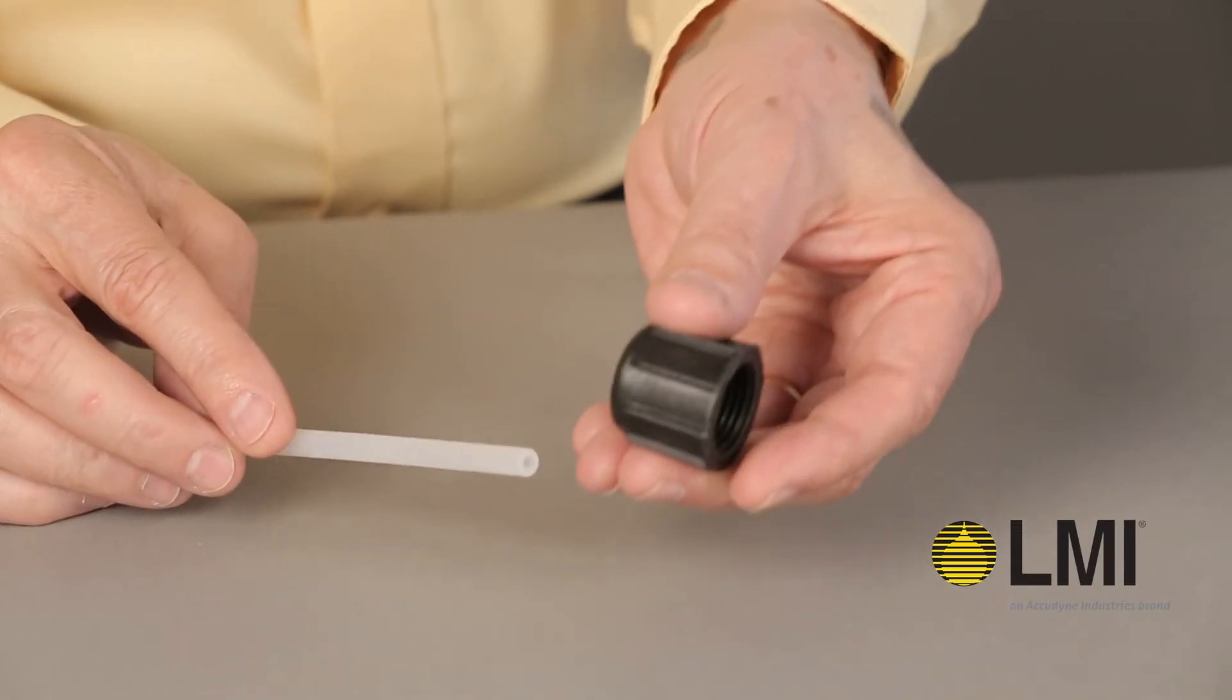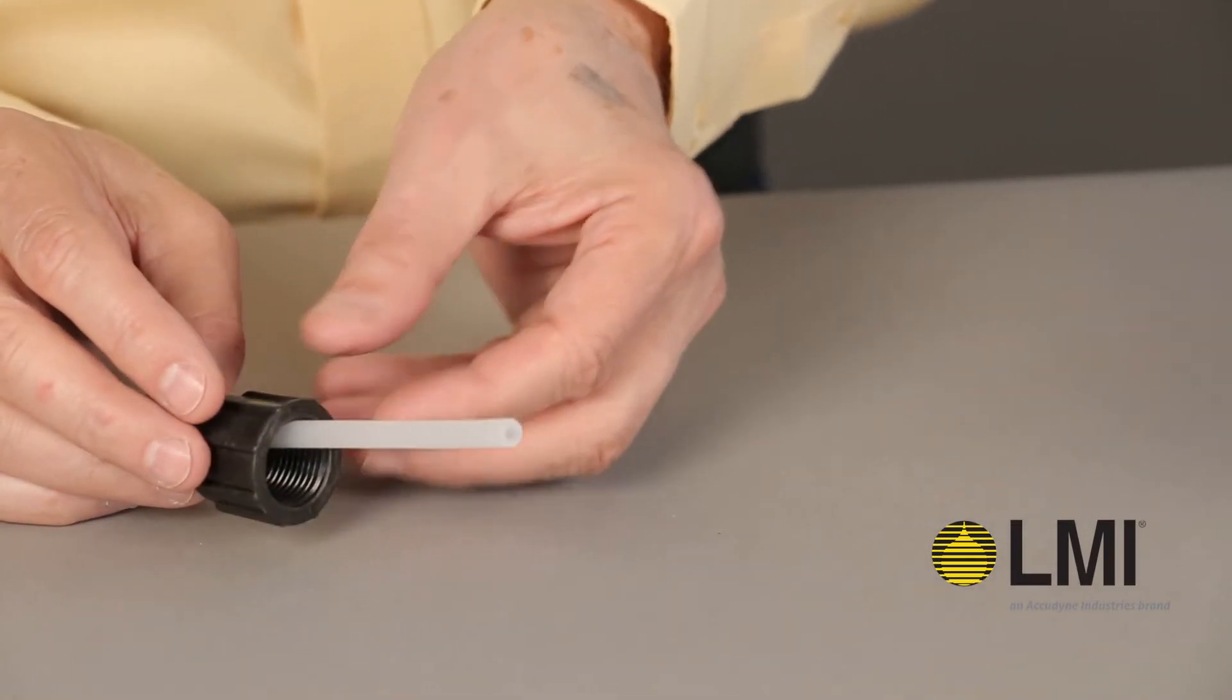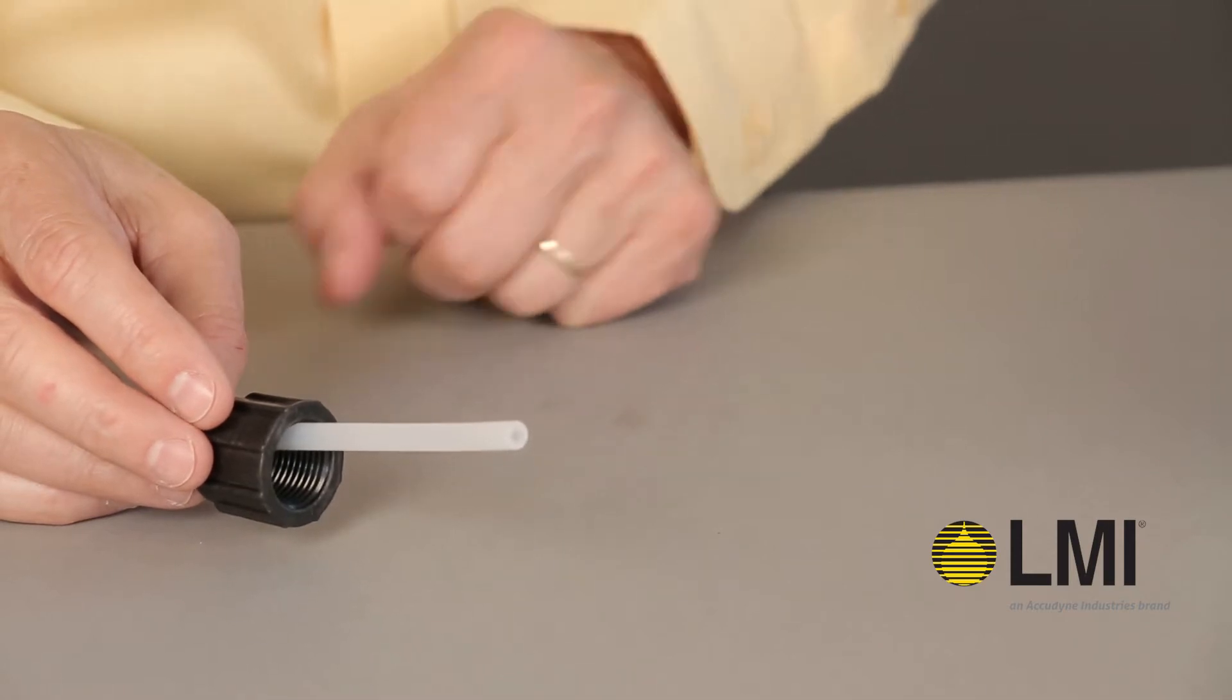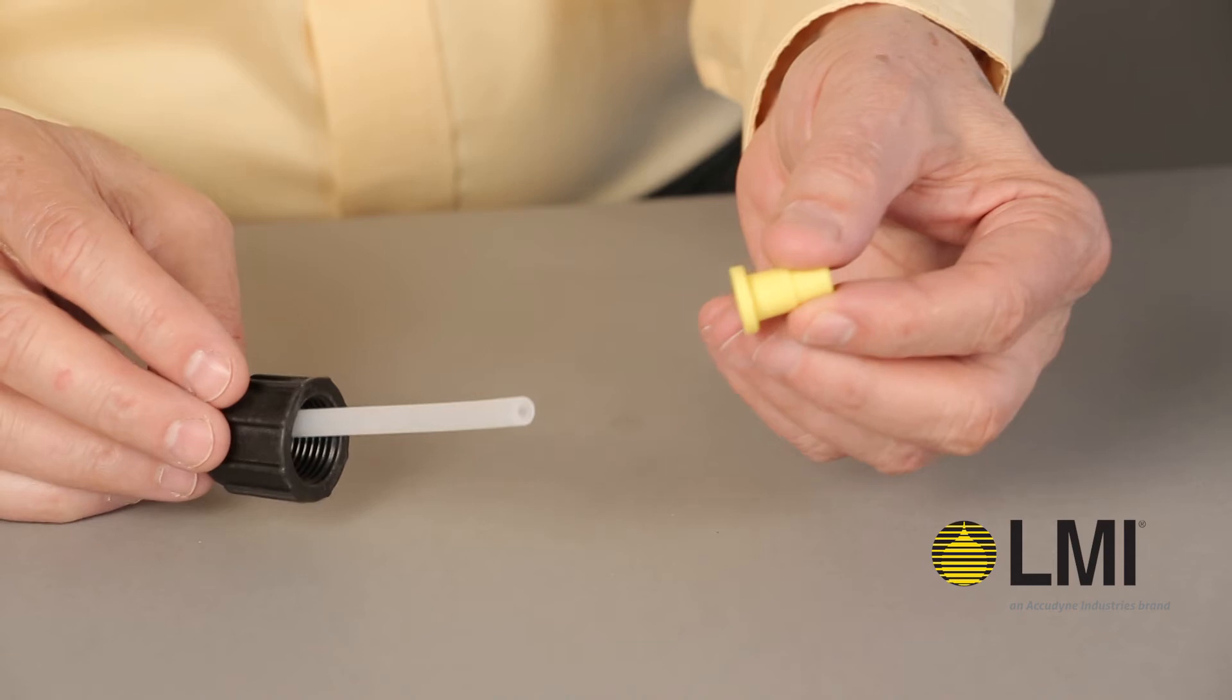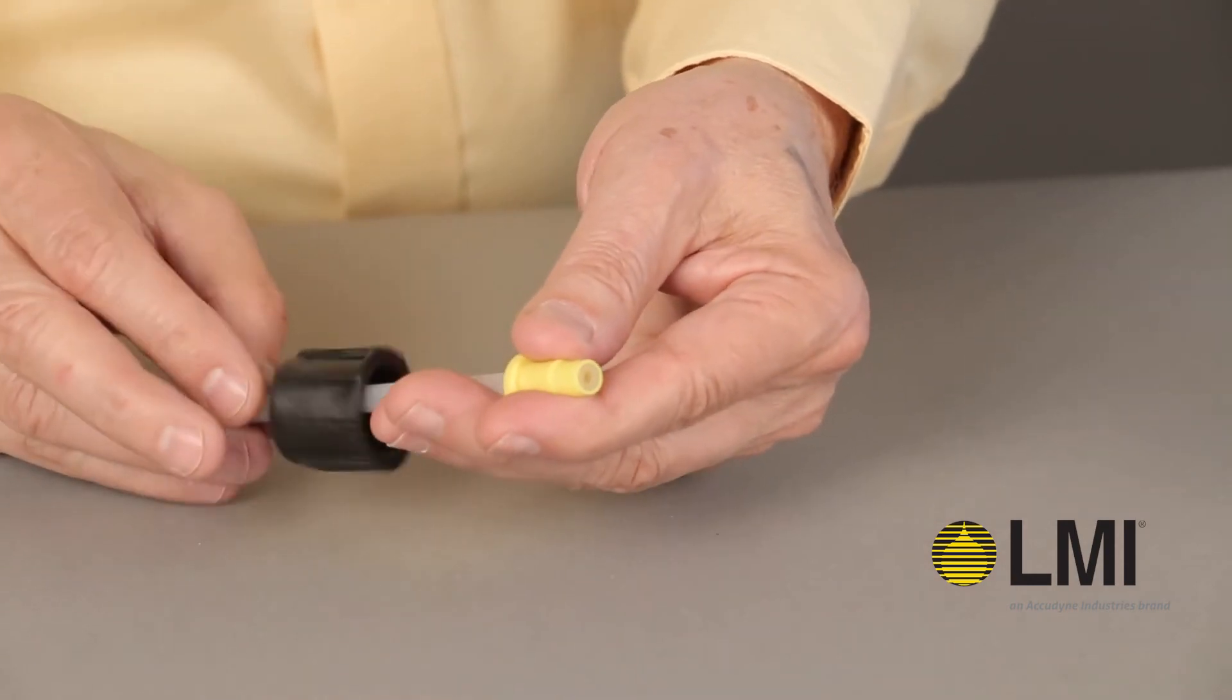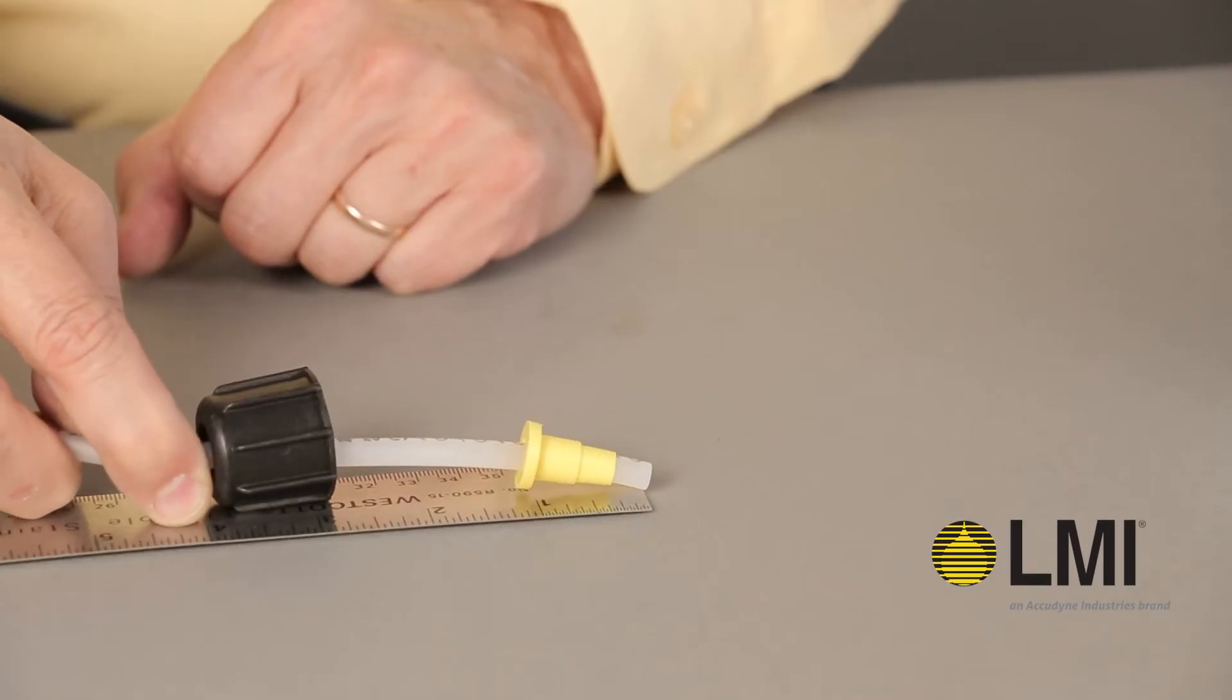Feed the cut tubing through the top of the coupling nut. Note the single ferrule design and insert the ferrule into the cut tubing with the raised collar positioned away from the freshly cut tube end. Position the ferrule so that a quarter inch of tubing is protruding.